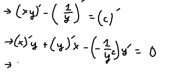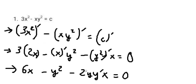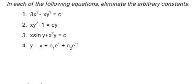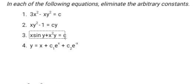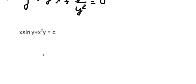Now we simplify. Negative and negative gives us positive. This is the final answer for number two. For question number three, we do the same as question number one — we need to take the derivative for both sides. So here is the final answer.